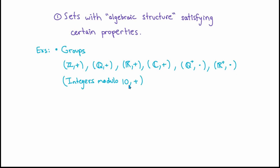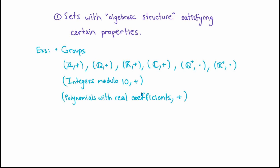These are some of the more familiar examples of groups, but there are also less familiar ones. For example, if we take the integers modulo 10 — or, if you're a computer scientist, think of the remainders 0 to 9 when you divide a whole number by 10 — that collection of remainders together with the operation of addition modulo 10 also forms a group called the additive group of integers modulo 10. Another important example is the collection of all polynomials with real coefficients together with addition of polynomials. This is a set with algebraic structure that satisfies all the properties needed to be called a group.